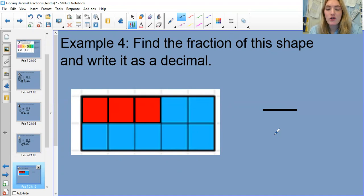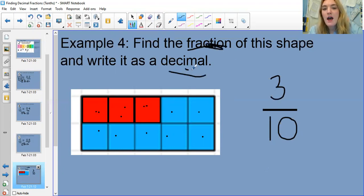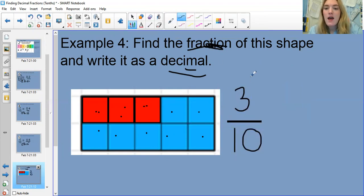First of all we're going to find the fraction. To find your denominator you need to count how many total parts of the shape there are. We've got one, two, three, four, five, six, seven, eight, nine, ten. Remember we're working with tenths today, so our denominator is always going to be ten. The fraction of this shape is what is shaded in red: one, two, three. So we've got three tenths. There is our fraction, but we need to find it as a decimal. What is three tenths as a decimal? It's three divided by ten. We're moving the decimal point back one space and then it becomes 0.3. We have written the shape as a fraction and also as a decimal.